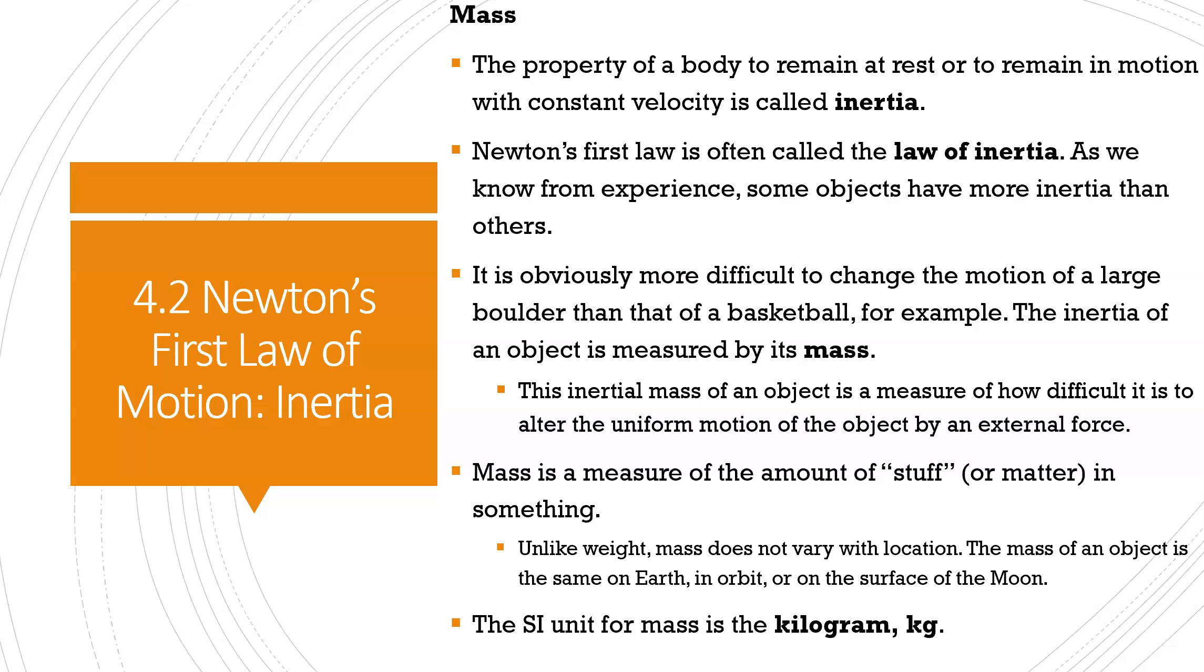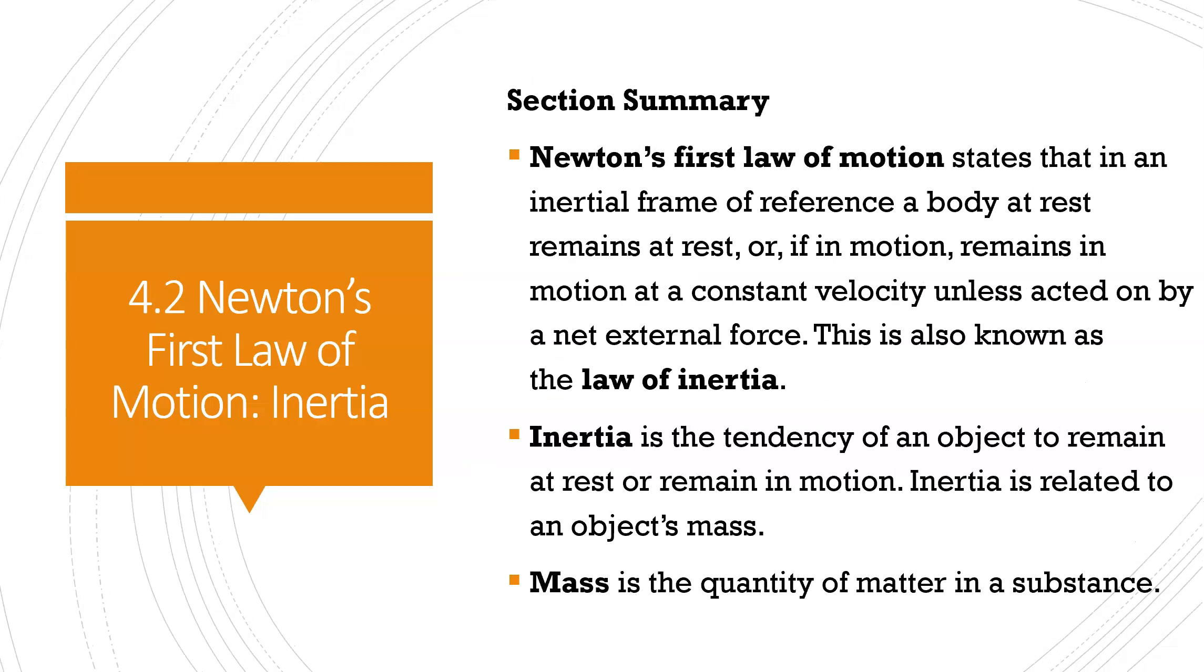Now, mass is a measurement of matter and the amount of matter that something contains. And so when we say something has inertia and is moving with constant velocity, then what we're talking about is the mass of something that is moving with constant velocity. So we measure inertia by knowing mass. If something is moving at a constant speed, the amount of inertia it has is related to how much mass it has as far as how much of a force it will take to counteract the motion. The unit that we use for mass in this class is always the kilogram.